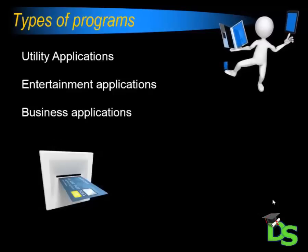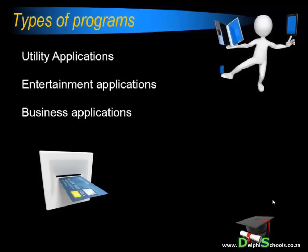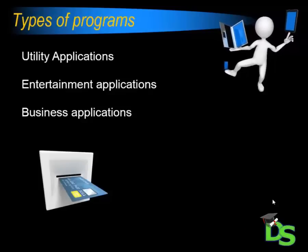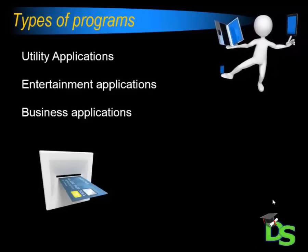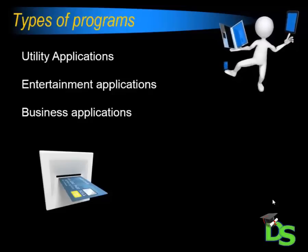Business programs help organizations to do business faster and to save costs. For example, banks have auto tellers to reduce queues at branch offices and to make banking accessible to as many clients as possible. Banks also provide devices to enable businesses to do card transactions on premises without exchanging cash. These devices are driven by software applications or programs. Nowadays we can also do banking online or on our cell phones by using programs developed for that purpose.